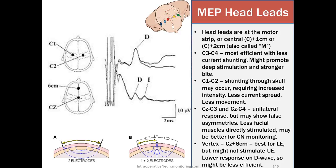So the first head lead placement also is C3C4, most efficient with less current shunting, might promote deep stimulation and stronger bites. C1C2 shunting through the skull may occur requiring increased intensity, less current spread, less movement. CZ to C3 and CZ to C4, a unilateral response but may show false asymmetries. Less facial muscle directly stimulated may be better for cranial nerve monitoring. And the vertex to the CZ plus 6 centimeters is best for lower extremities but might not stimulate upper extremities. Lower responses on D waves so might be less efficient.